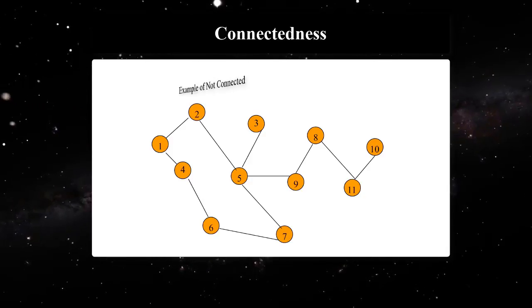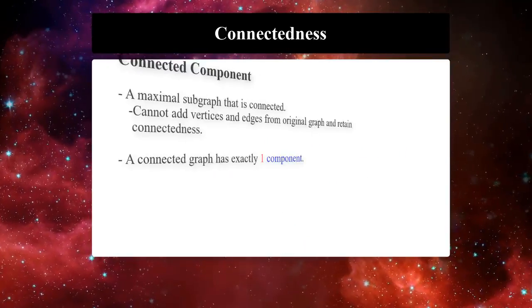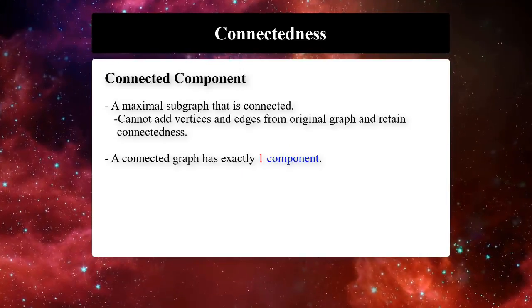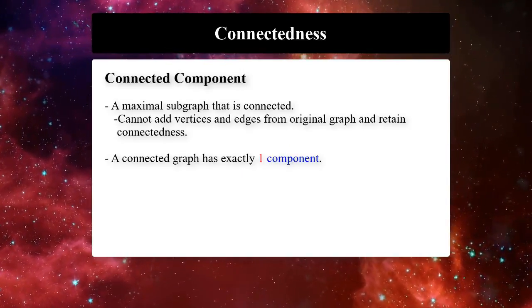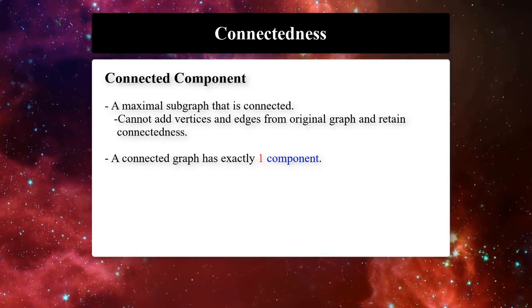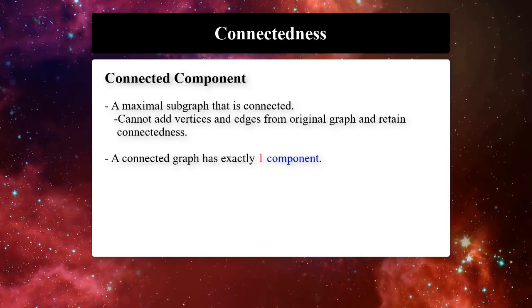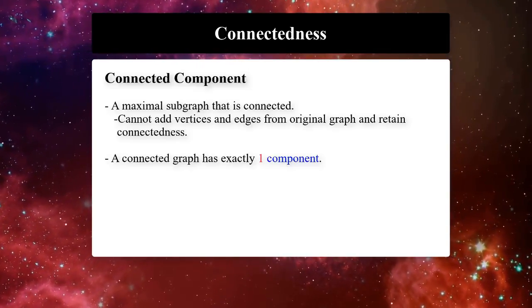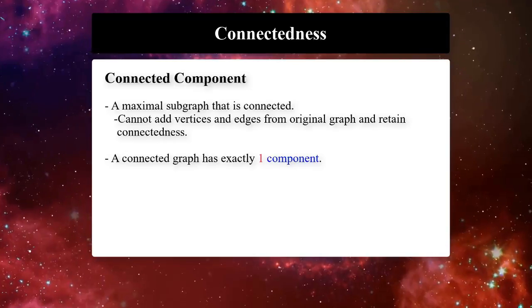A maximal subgraph that is connected in a graph is called a connected component. Note that we cannot add vertices and edges from the original graph to the component and retain its connectedness because it is maximal.